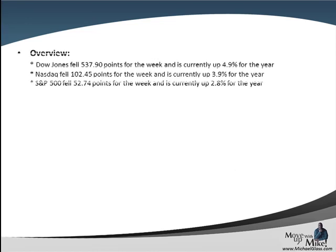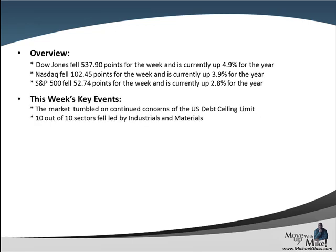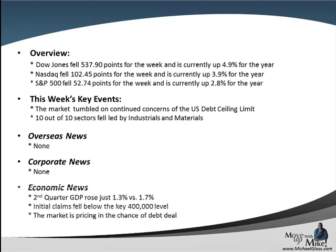As we begin to look at the week that was, we can see that all three major indexes — the Dow, the Nasdaq, and S&P 500 — all fell for the week pretty hard. Ten out of ten major sectors all fell, and we were led by industrials and materials, close to 5%. The tumble that happened this week was all about the U.S. debt ceiling. We really didn't have any overseas news or anything on the corporate side that moved the market — it was really about the economic news of the week.